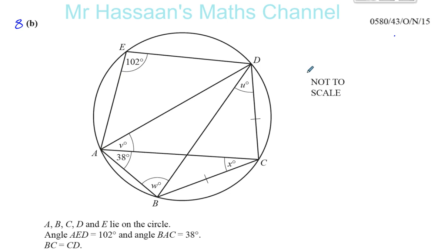There are different ways you can get questions answered, and sometimes you find a particular angle before other angles, depending how you see the question. So let's have a look at what it says. It says A, B, C, D and E — they all lie on the circle, so they're all on the circumference of the circle.